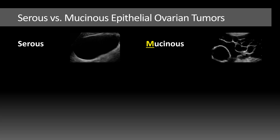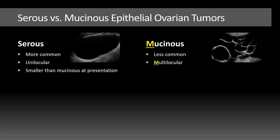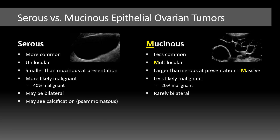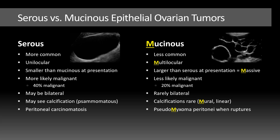To differentiate mucinous from serous tumors: serous tumors are more common than mucinous. Serous tends to be unilocular, whereas mucinous is multilocular. Serous tumors are typically smaller; mucinous tumors are often massive. Serous tumors are more likely to be malignant — about 40% are malignant versus only 20% of mucinous tumors. Serous tumors may be bilateral, which is uncommon for mucinous. Serous tumors may show psammomatous calcification, particularly in low-grade serous cystadenocarcinomas, while calcification is rare with mucinous tumors — tending to be mural and linear when present. When serous tumors metastasize, you see peritoneal carcinomatosis; mucinous tumors can also do this, but uniquely can produce pseudomyxoma peritonei when they rupture, with gelatinous metastases that scallop the liver surface. Remember the M's for mucinous: multilocular, massive, mural calcification, and pseudomyxoma peritonei on rupture.